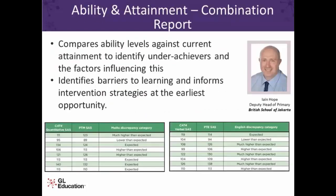Going back to that idea of comparing ability and attainment: the combination report compares the quantitative with the PTM (Progress Test in Maths) and the verbal with the PTE (Progress Test in English), to see where students are meeting, exceeding, or not quite meeting their potential. This helps you to identify what the barriers to learning are and put into place specific intervention strategies to support your students at the earliest possible opportunity. There is another case study from the British School of Jakarta describing this process, which is available on our website.